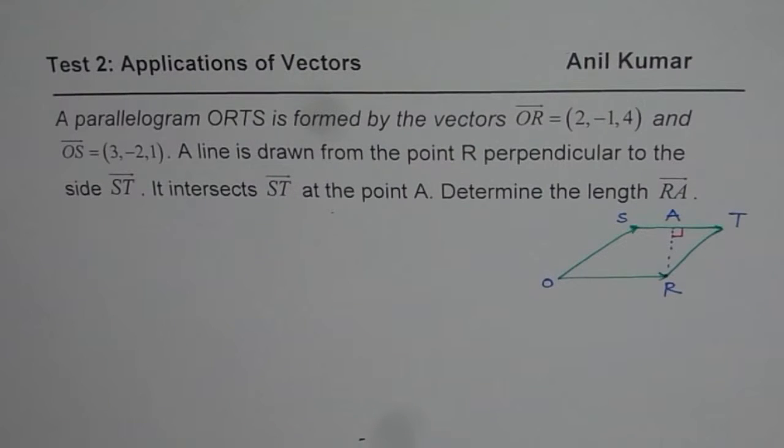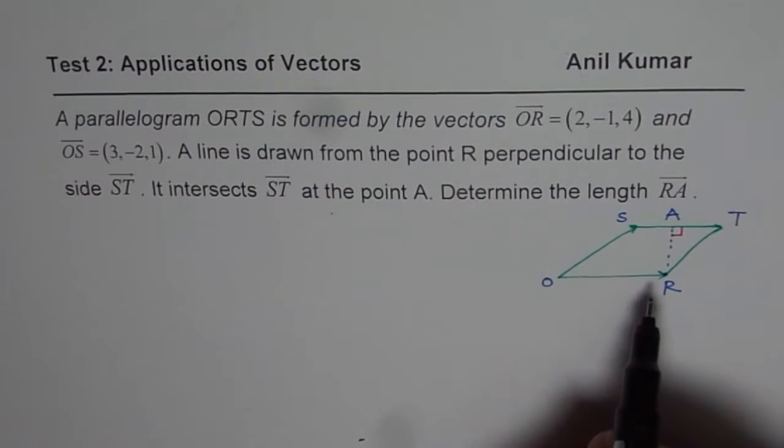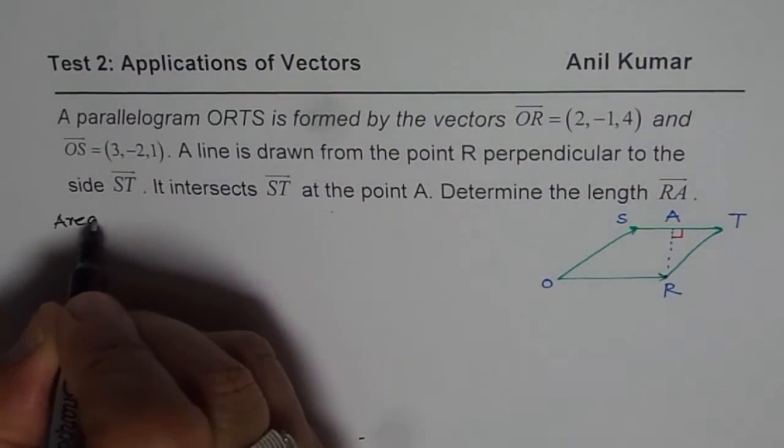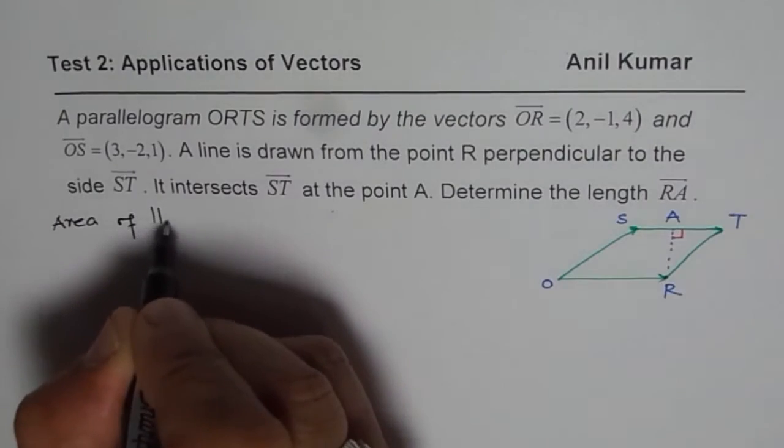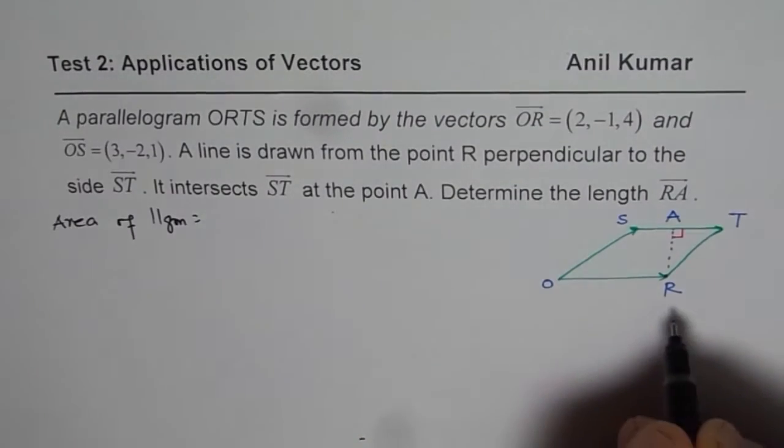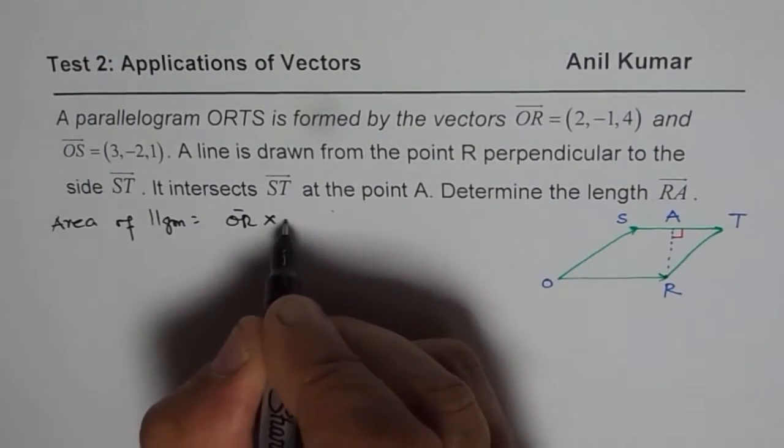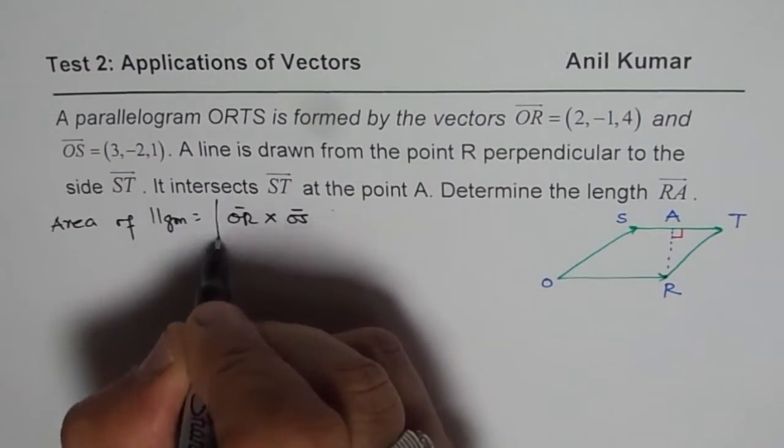I hope it is absolutely clear. Now you can pause the video, answer and then look into my solution. Now the strategy which we will work with here is area of a parallelogram is what? So the strategy is area of parallelogram is basically cross product. So it is OR cross product of OS. So that is their magnitude.